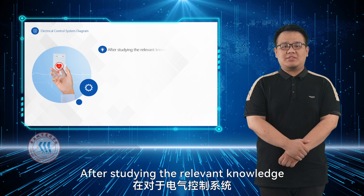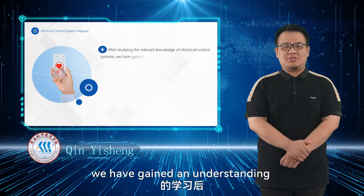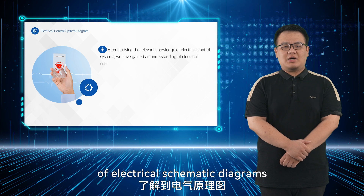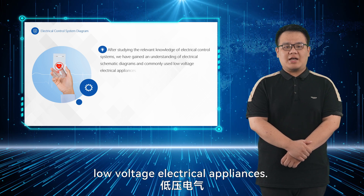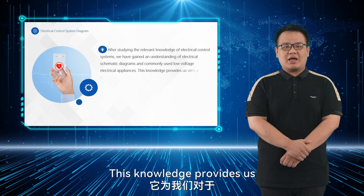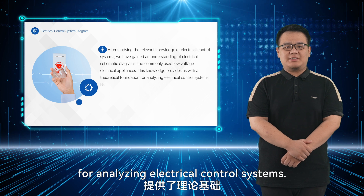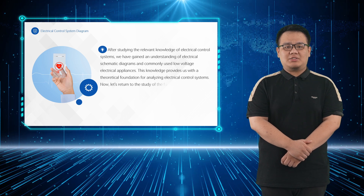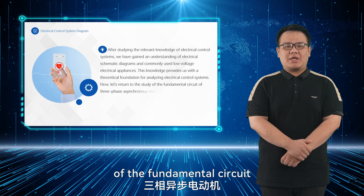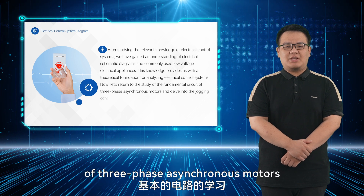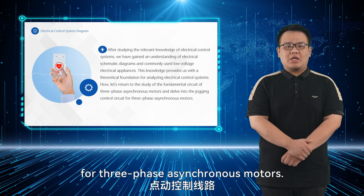After studying the relevant knowledge of electrical control systems, we have gained an understanding of electrical schematic diagrams and commonly used low-voltage electrical appliances. This knowledge provides us with a theoretical foundation for analyzing electrical control systems. Now, let's return to the study of the fundamental circuit of three-phase asynchronous motors and delve into the jogging control circuit for three-phase asynchronous motors.